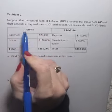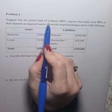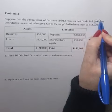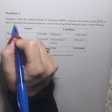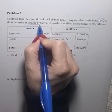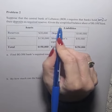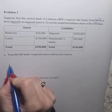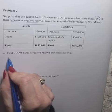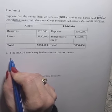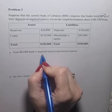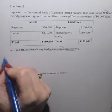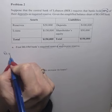Suppose that the central bank of Lebanon, BDL, requires that banks hold 10% of their deposits as required reserve. Given the simplified balance sheet of Blum Bank, question A: find Blum Bank's required reserve and excess reserve.